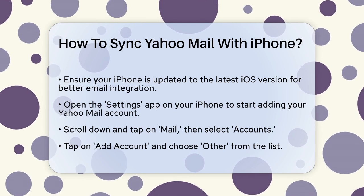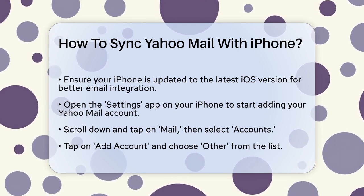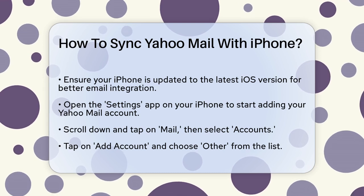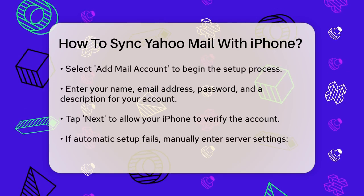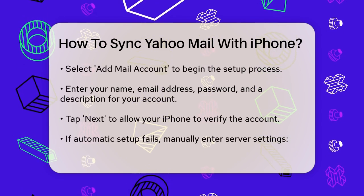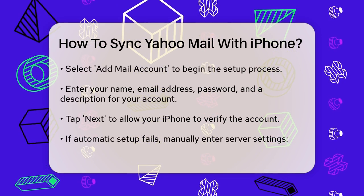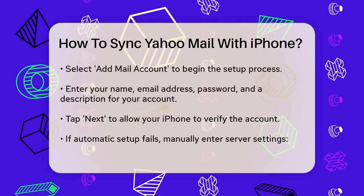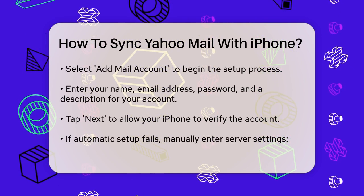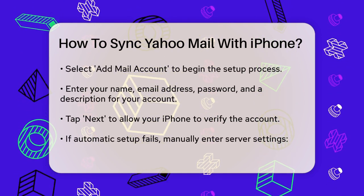Next, you need to add your Yahoo Mail account to your iPhone. To do this, go to the Settings app on your iPhone. Scroll down and tap on Mail, then select Accounts. Here you'll see an option to Add Account. Tap on this and select Other from the list of email providers. Now choose Add Mail Account. Enter your name, email address, password, and a description for your account. Tap Next to continue.